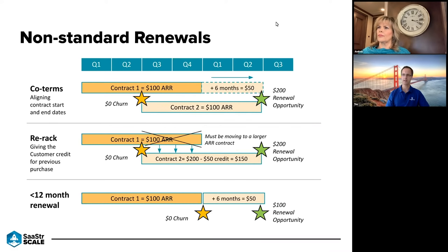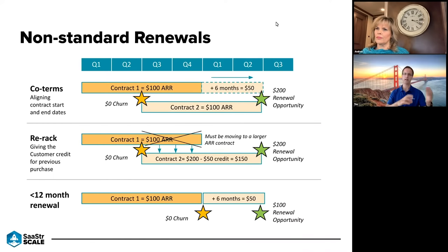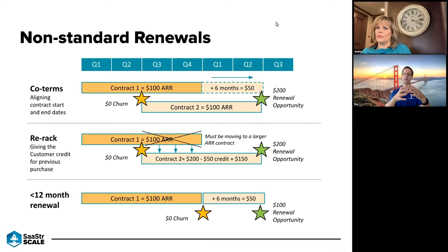The second type is a re-rack: taking an existing contract that hasn't finished yet — maybe halfway through — and for whatever reason the customer wants a different contract. Maybe a much larger one, maybe moving from on-prem to cloud, or trying a different use case. In certain instances it makes sense to give the customer credit for the remaining balance on their first contract — not as standard policy, but especially if the second contract is very significant. You combine them into a new ARR number, and as long as the ARR value is growing, you recognize zero churn.